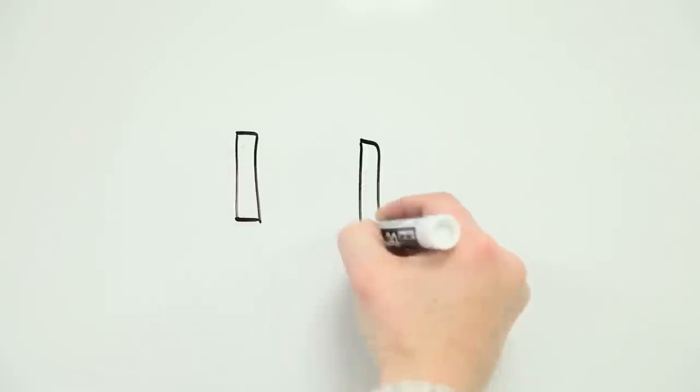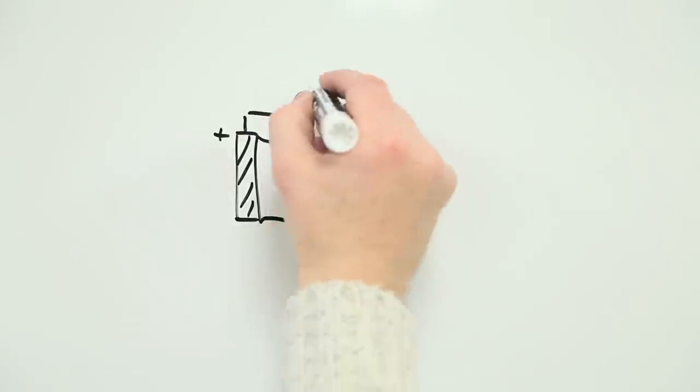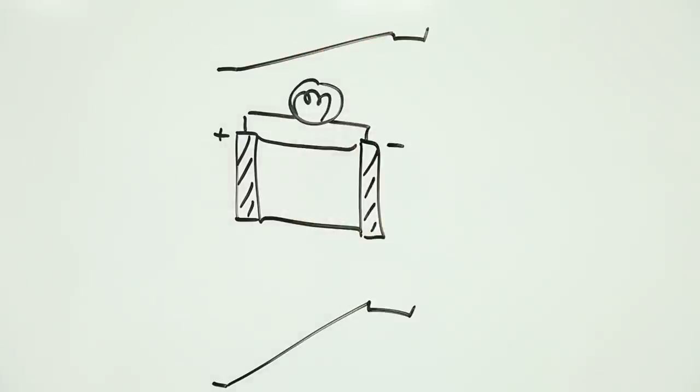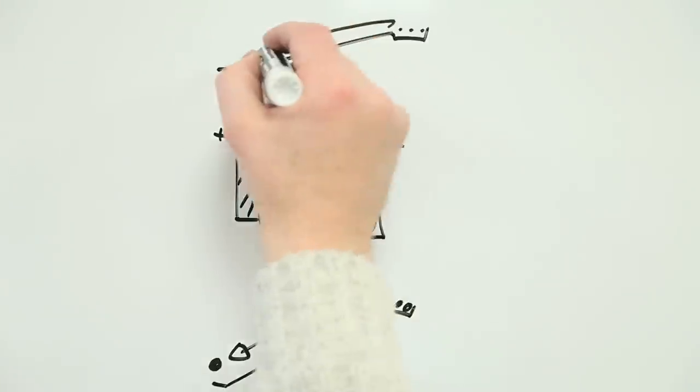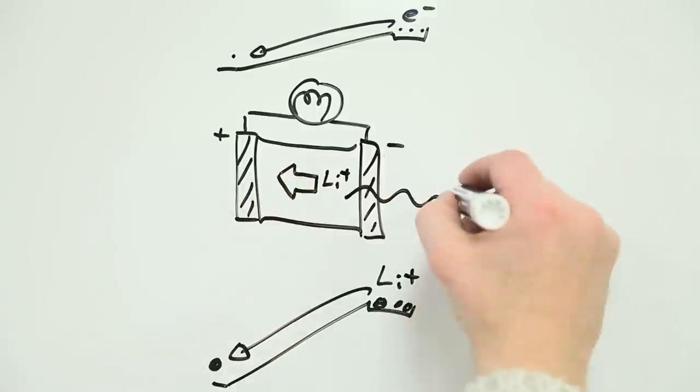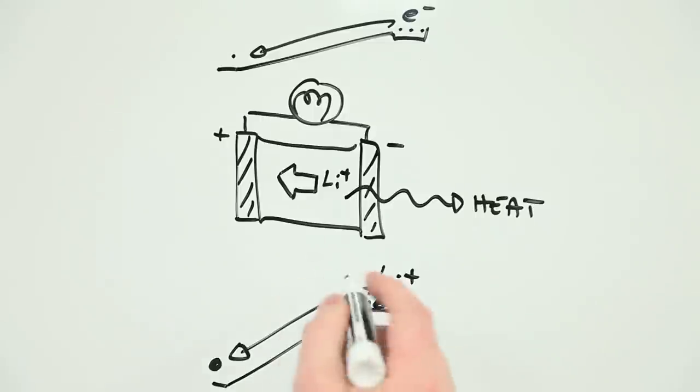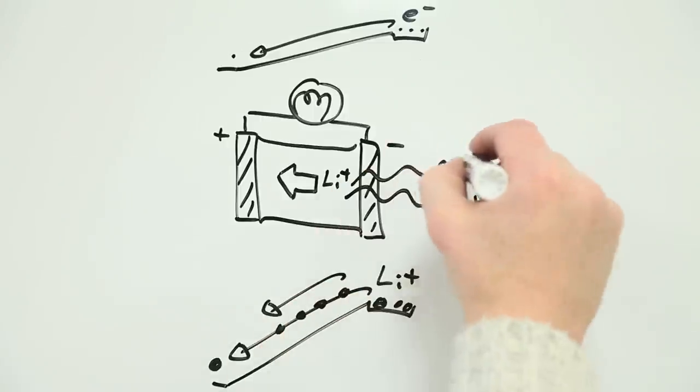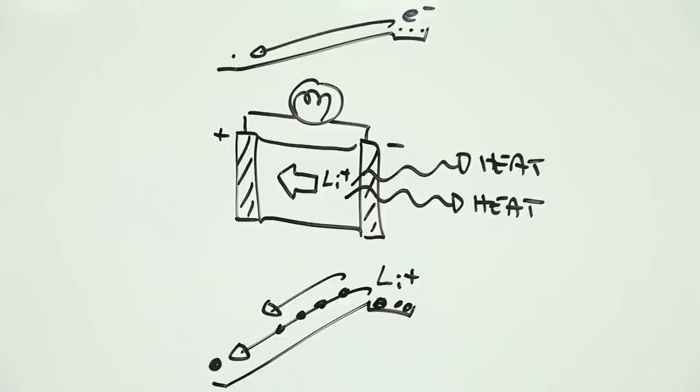The problem is, the properties that make lithium ion batteries so useful also make them potentially dangerous. As those lithium ions roll down the chemical energy slope, they release energy in the form of heat. The more electrical current that's drawn, the more ions roll down the slope, and the hotter the battery gets.